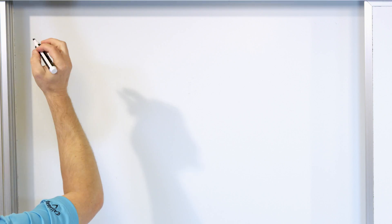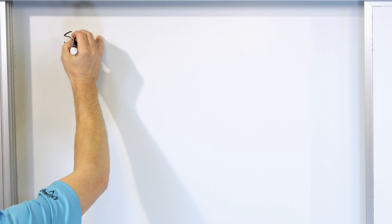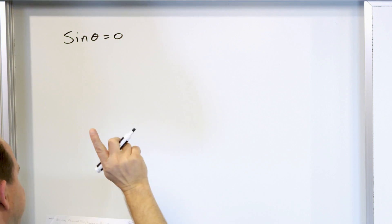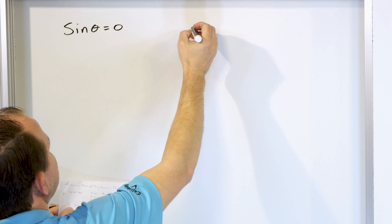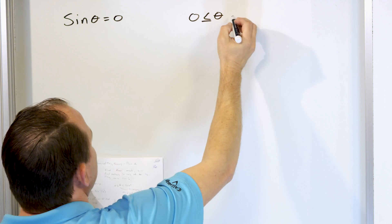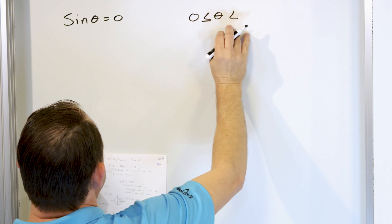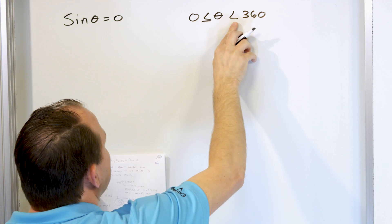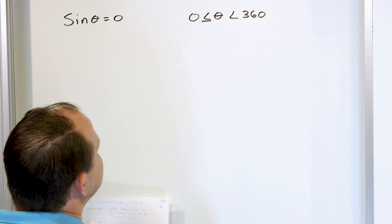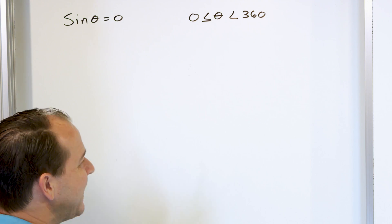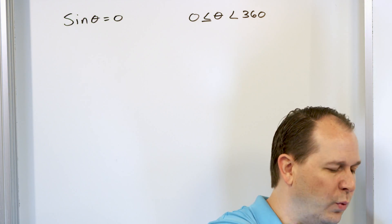Let's do a very simple equation: sine of theta is equal to zero. Solve for theta, but it's also known that theta can only be in the range between zero and 360 degrees — including zero, but not quite including 360. So that means essentially the whole unit circle.